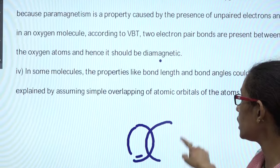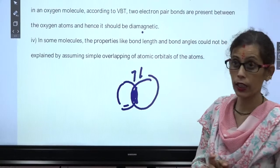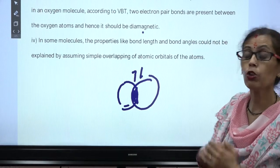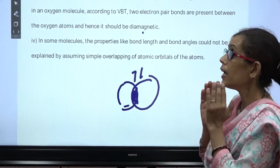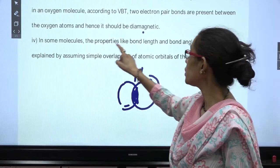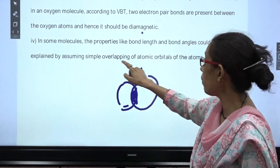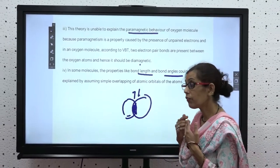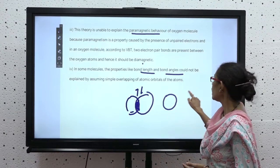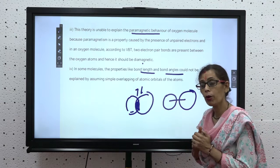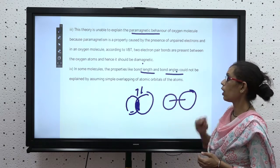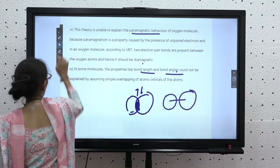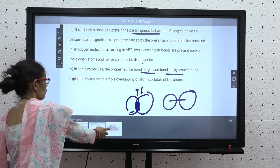In oxygen, after sharing the electrons become paired, so the behavior should be diamagnetic. But the actual behavior of oxygen is paramagnetic — and this paramagnetic behavior cannot be explained on the basis of VBT. The fourth limitation: in some molecules, properties like bond length and bond angle cannot be explained by simply assuming overlap of atomic orbitals. VBT can tell us that a bond forms but cannot tell us the bond length or bond angle.